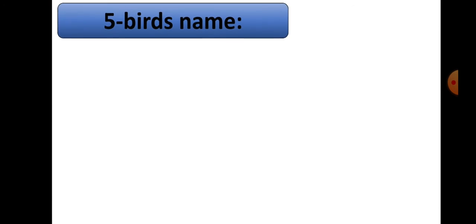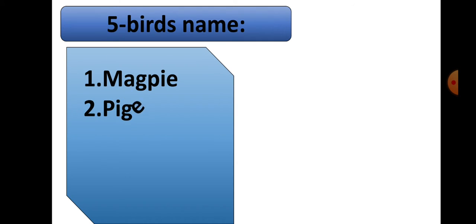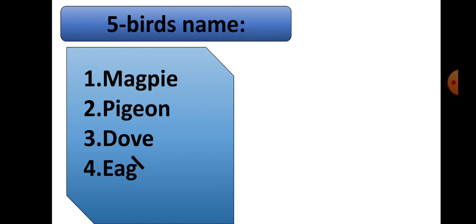Five birds' names. Number one: Magpie. Number two: Pigeon. Number three: Dove. Number four: Eagle. Number five: Owl.